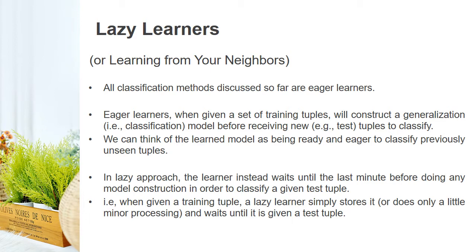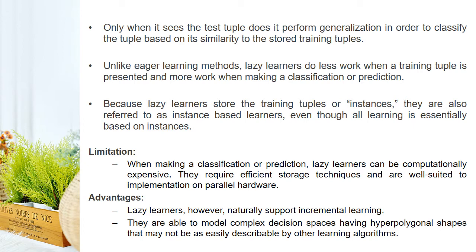In the Lazy approach, the learner instead waits until the last minute before doing any model construction in order to classify a given test tuple. Until it is given a test tuple, it will not build a classification model. When given a training tuple, a Lazy learner simply stores it and waits until it is given a test tuple. Only when it sees the test tuple does it perform generalization to classify the tuple based on its similarity to the stored training tuples. Unlike Eager Learning methods, Lazy learners do less work when a training tuple is presented and more work when making a classification or prediction.